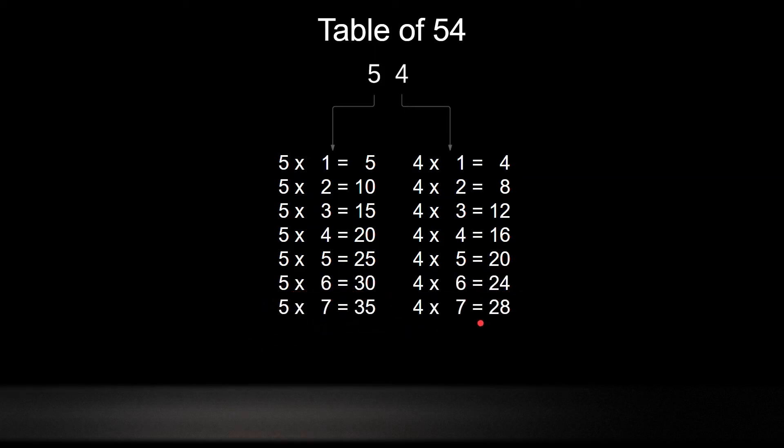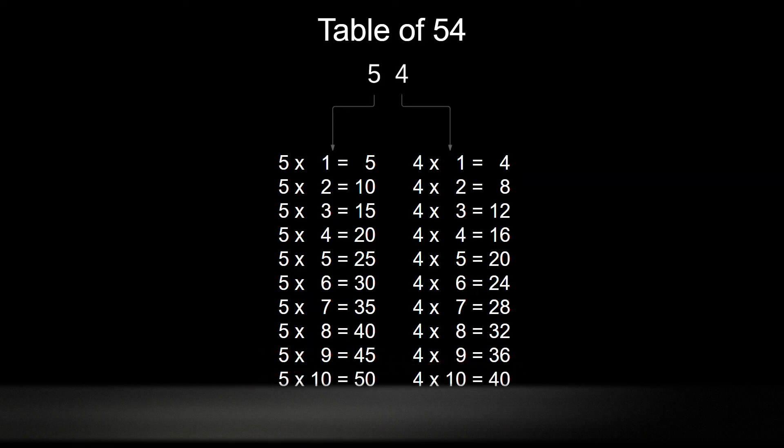5 sevens are 35 and 4 sevens are 28. 5 eights are 40 and 4 eights are 32. 5 nines are 45 and 4 nines are 36. 5 tens are 50 and 4 tens are 40.